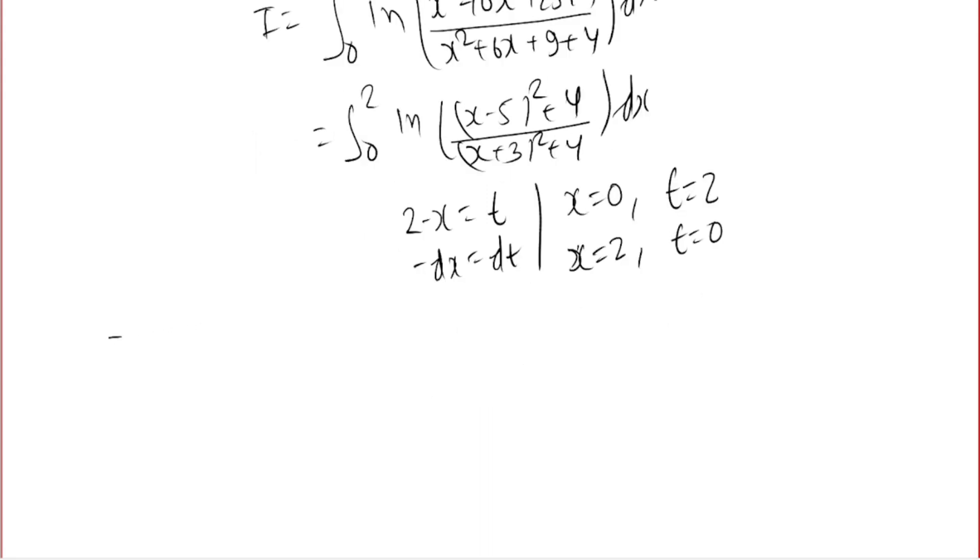So now I can write I = ∫₂⁰ ln((((2-t) - 5)² + 4)/((2-t + 3)² + 4)) × (-dt). I can take the minus sign and flip the limit, so we get I = ∫₀². If you simplify the numerator, we have (t + 3)² + 4.